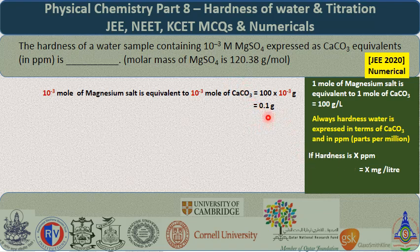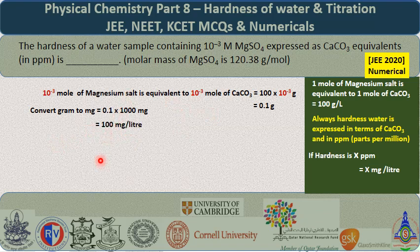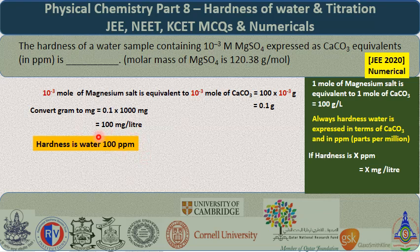Convert this gram into milligram — multiply by 1000 — and you get 100 milligram per litre, so x = 100. Thus, the hardness of water is equal to 100 ppm. That is the answer by the conventional method.